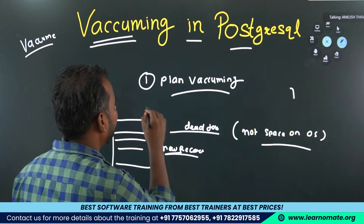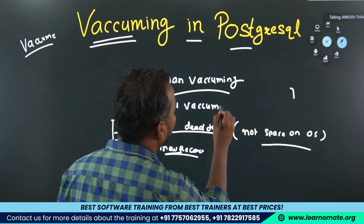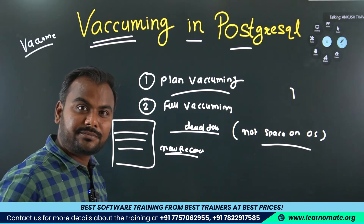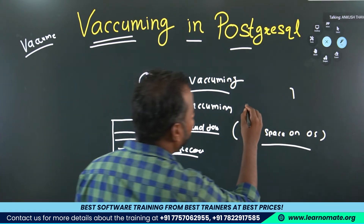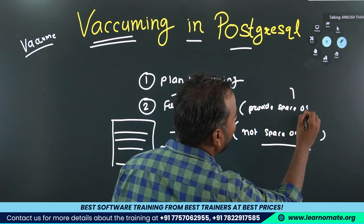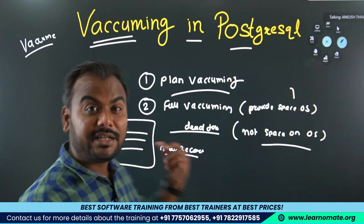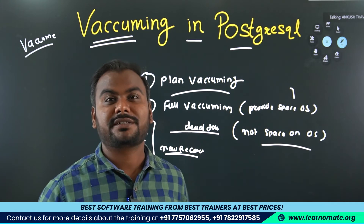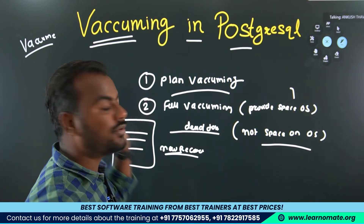If you want the space to be available at the operating system level as well, you can use full vacuuming. In full vacuuming, it removes the dead tuples and also releases the space at the operating system level, making it available for new records. That is the main difference between plain vacuuming and full vacuuming.